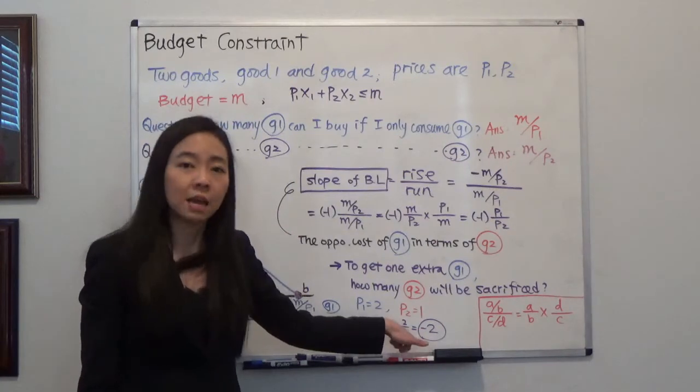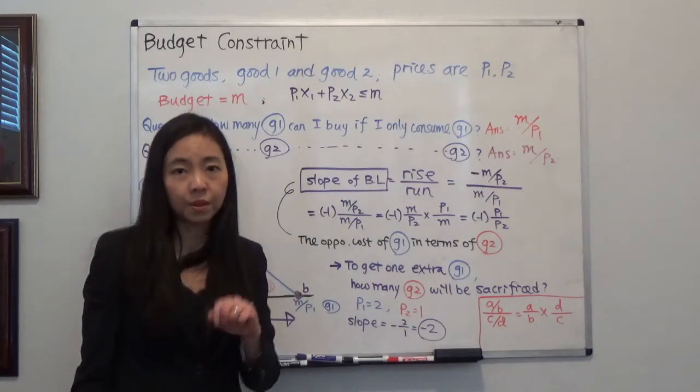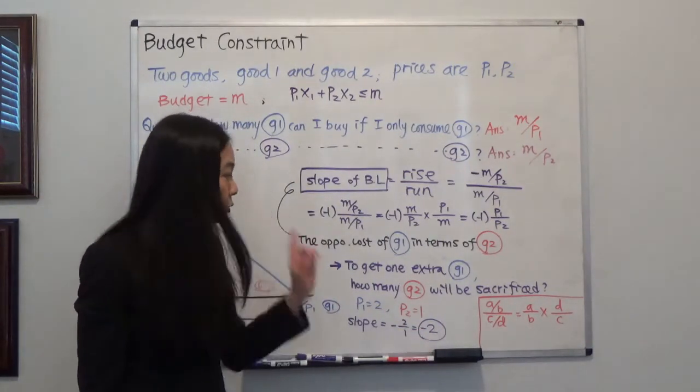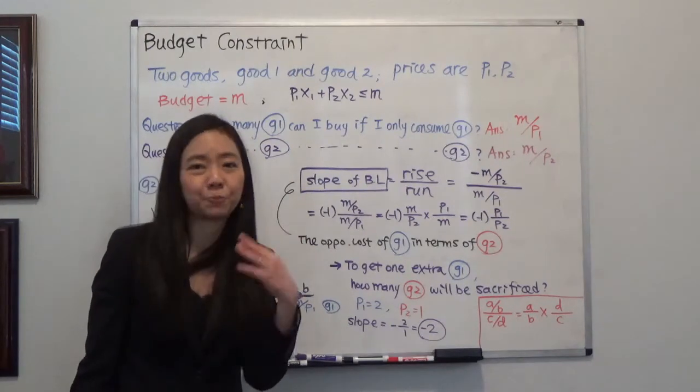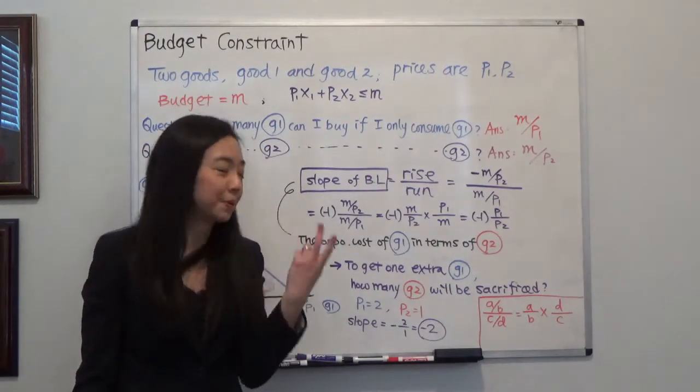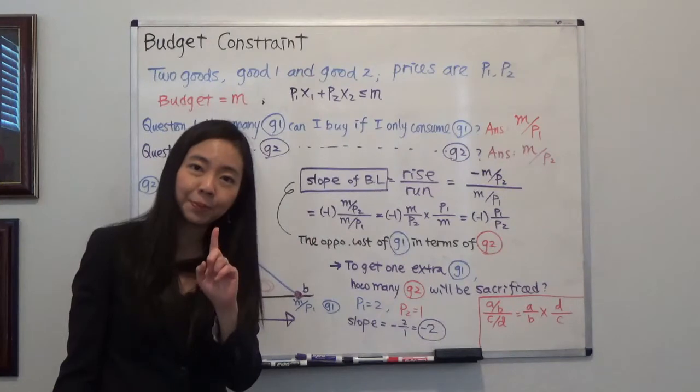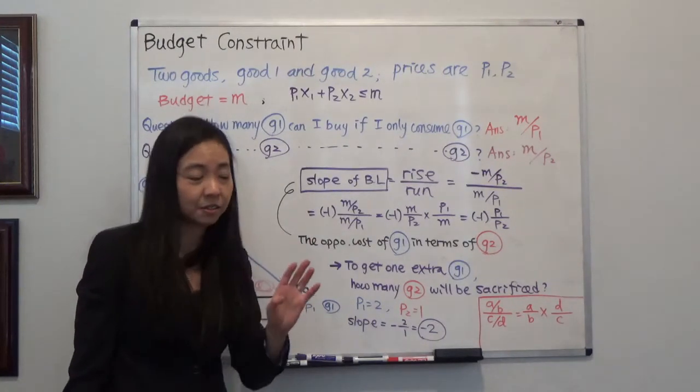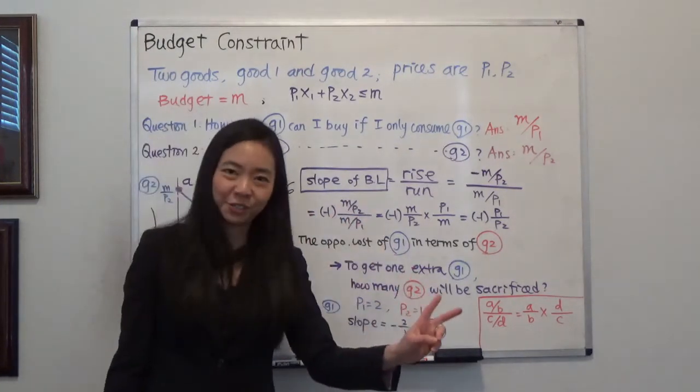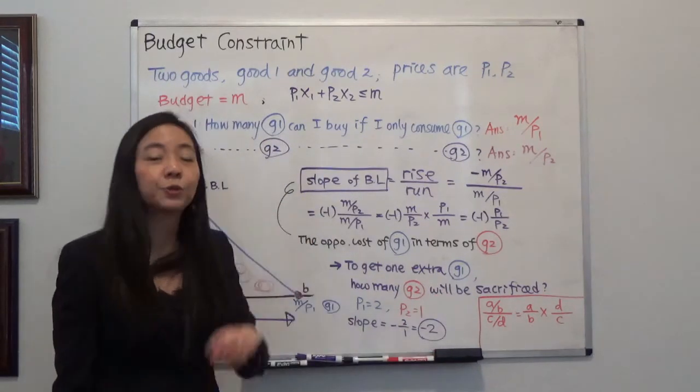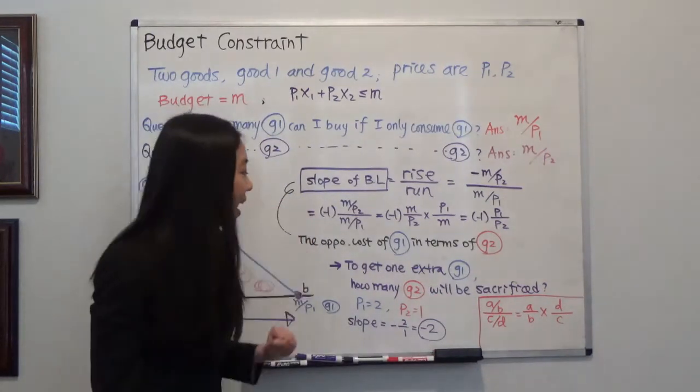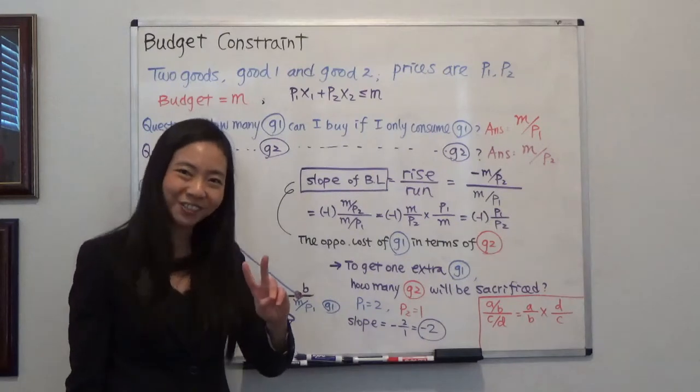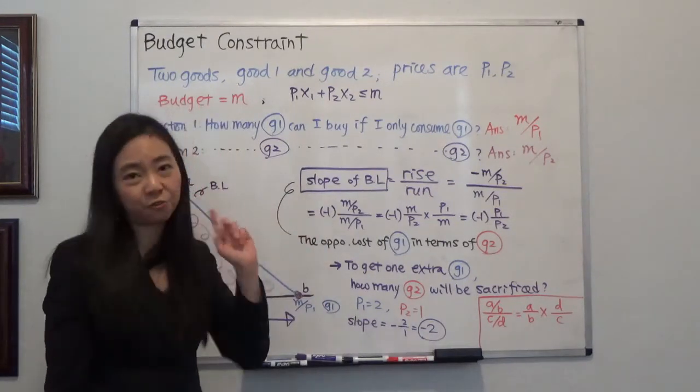What does that mean? That means in order to consume one more apple, in order to buy one more apple, I have to pay this $2. And because I pay this $2 on one apple, I cannot use the $2 to buy two oranges. Meaning in order to get one apple, I have to sacrifice two oranges. So that's the meaning of the budget line.